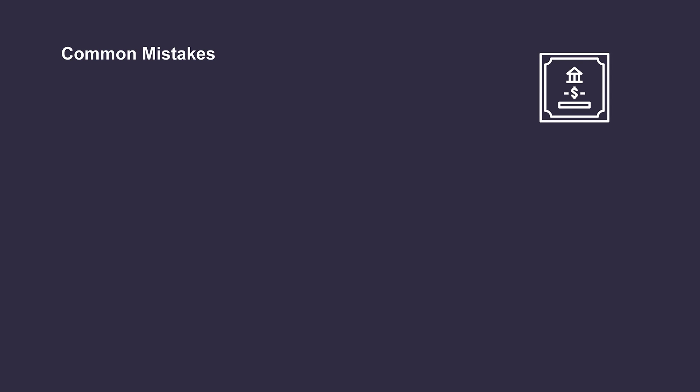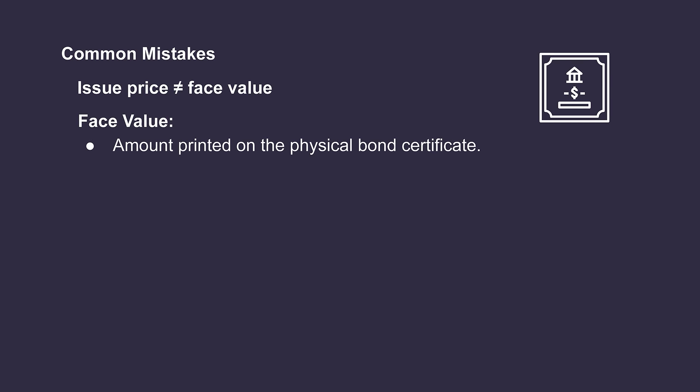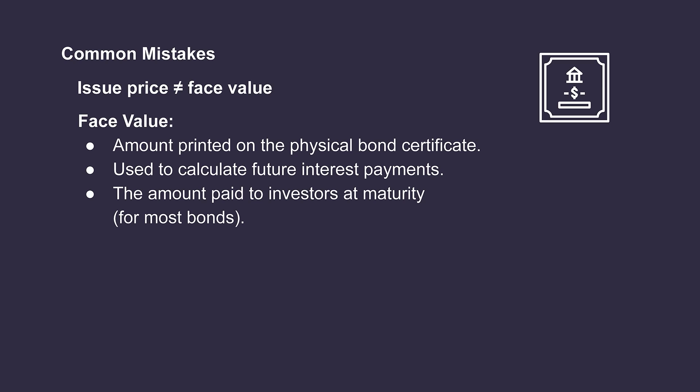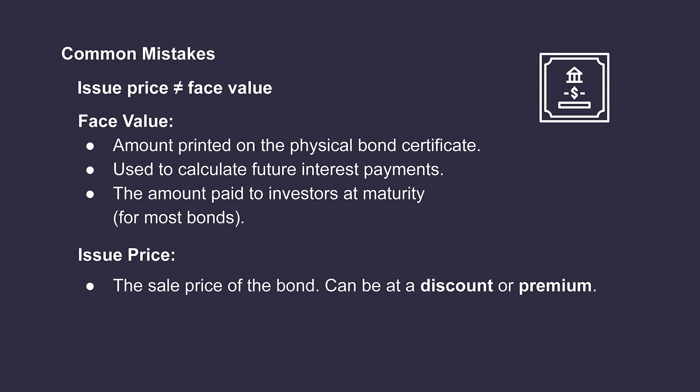Now that we have a good understanding of bonds, let's run through a quick common misconception: issue price does not always equal face value. This is important as it not only impacts the amount of funds the company receives from investors, it also impacts the accounting process. The face value is the amount that is printed on the face of the physical bond certificate and is used as the figure to calculate future interest payments. This is the amount paid back to investors at the maturity date for most bonds. However, the issue price is the actual amount that changes hands. The issue price will be different than the face value whenever the company decides to issue the bonds at either a discount or a premium.